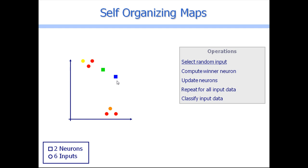Let's select a different input. Suppose the algorithm selected this one. In this case the winner neuron is this blue one, so we have to update the neuron. We make a displacement in this neuron and also in the neighboring neurons.